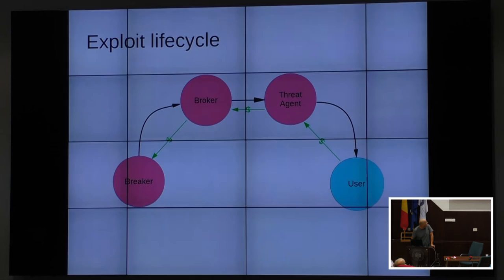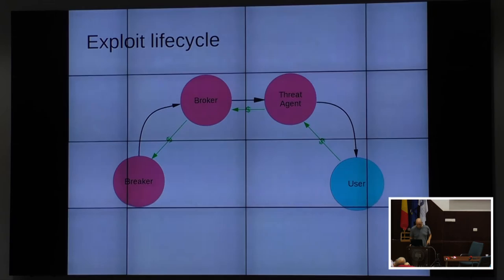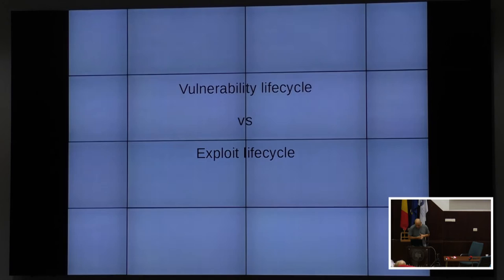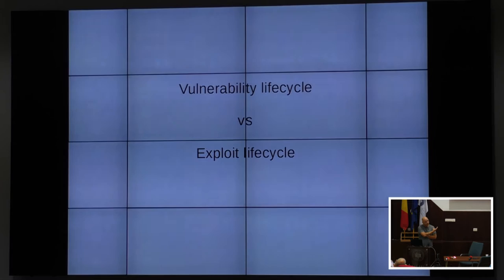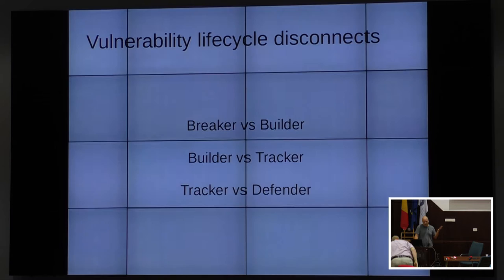Exploits have a very different lifecycle. In the happy path, the breaker — maybe they found the vulnerability, maybe they grabbed it from someone else's updates — turns it into an exploit, passes it to a broker, the bad guys get a copy and misuse it against the user. You can find places online that will happily buy exploits you write. The vulnerability life cycle — finding and fixing vulnerabilities — is supposed to limit the profitability of the exploit life cycle. We want to handle vulnerabilities so that we don't have to handle exploits, because exploits are much worse to handle.